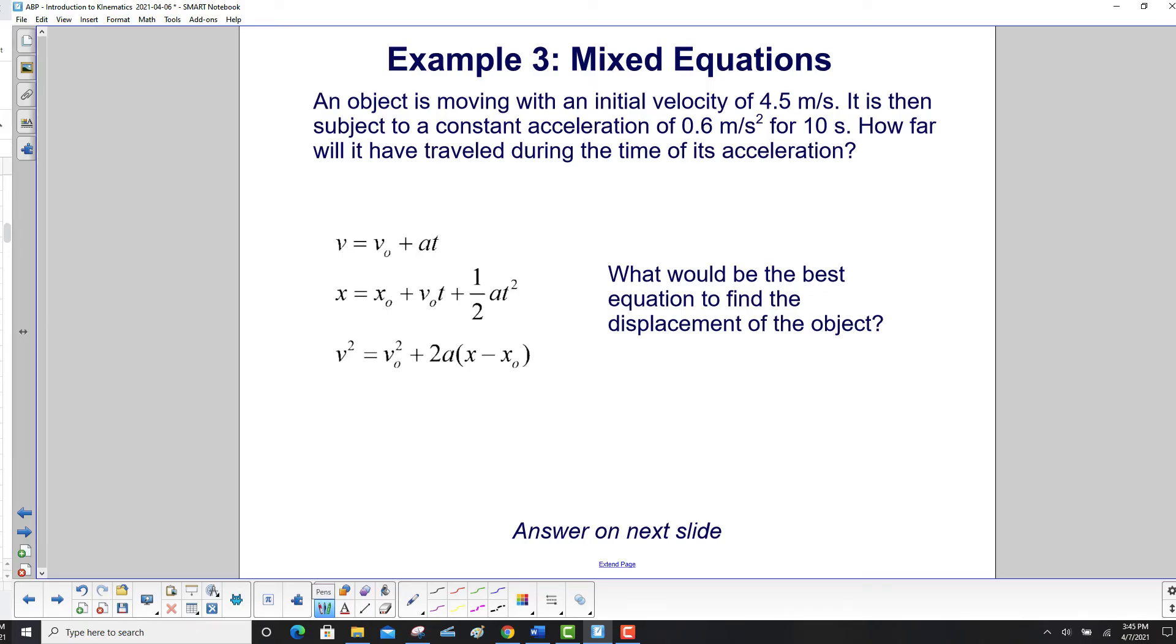An object is moving with an initial velocity of 4.5 meters per second and is subject to a constant acceleration of 0.6 meters per second squared for a time of 10 seconds. How far, or what is its displacement, during the time of its acceleration? So which one of these would be the best equation to find the displacement of the object?